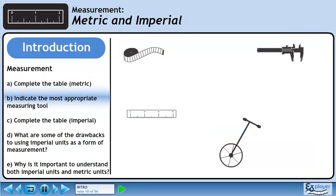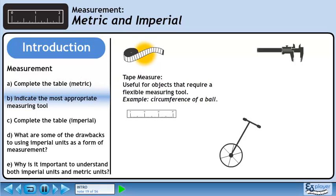In Part B, we are given a list of scenarios and we need to determine the most appropriate measuring tool. A tape measure is useful for objects that require a flexible measuring tool. For example, a tape measure can be used to measure the circumference of a ball.